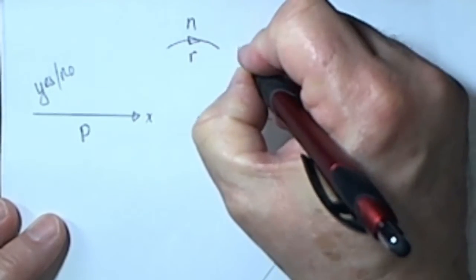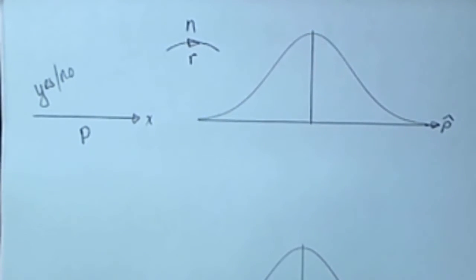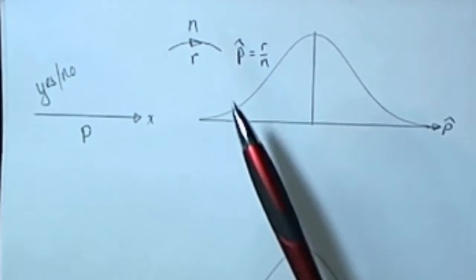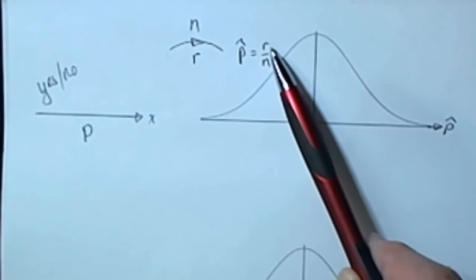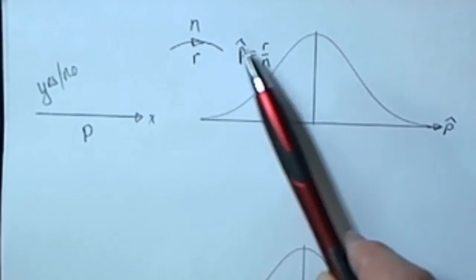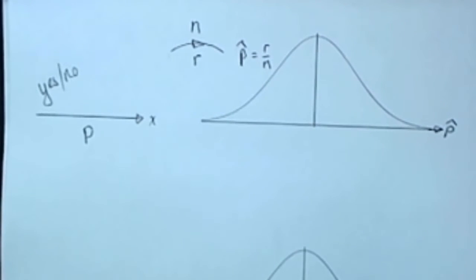Now in each case, that proportion will be referenced as P hat and it will be calculated as the number of successes divided by the size of the sample.